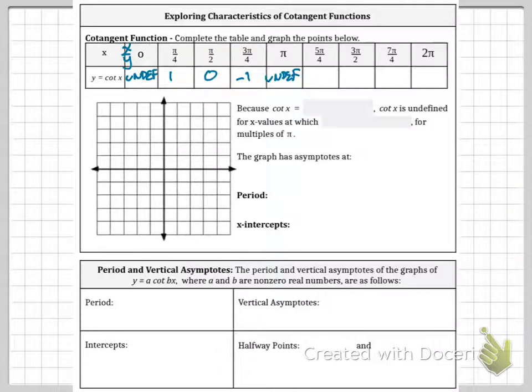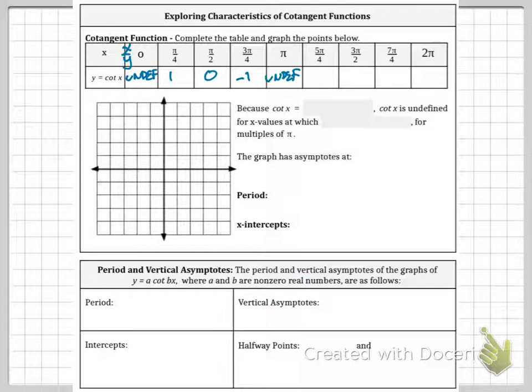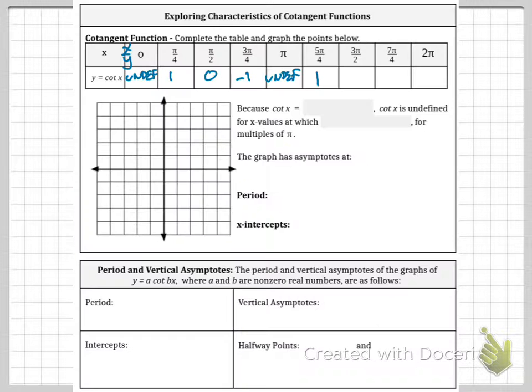Then at 5π/4, we get negative over negative, which is a positive 1. So notice that it'll repeat. At 3π/2, we have x over y, which is 0. So it's repeating. At 7π/4, we get negative 1. And at 2π, we are undefined.